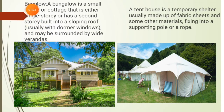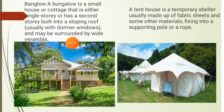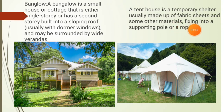Next we will see bungalow. A bungalow is a small house or cottage that is either single-storied or has a second story built into a sloping roof, usually with dormer windows and may be surrounded by wide verandas. A tent house is a temporary shelter usually made up of fabric sheets and other materials fixed into a supporting pole or rope.